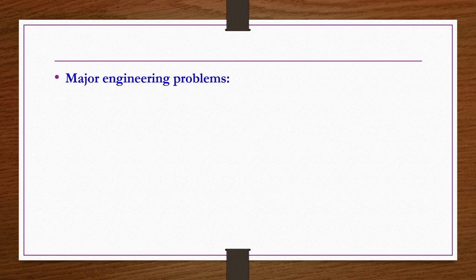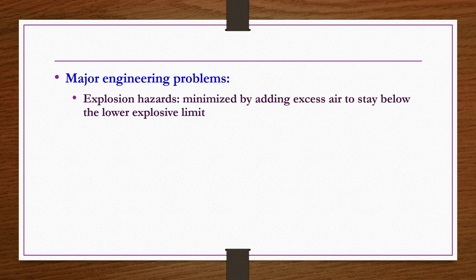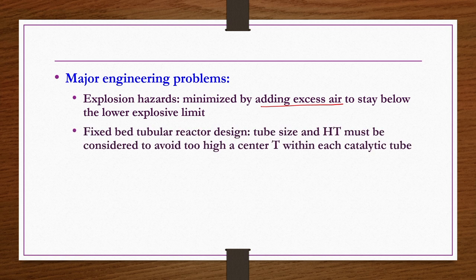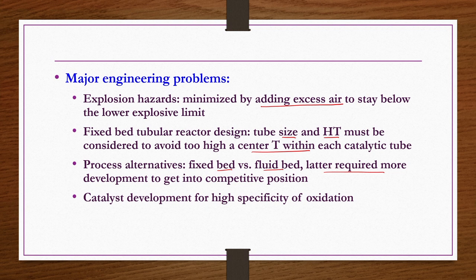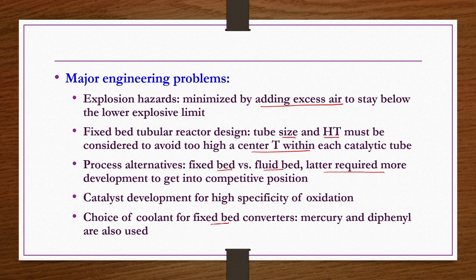Major engineering problems for phthalic anhydride production: explosion hazards can be minimized by adding excess air to stay below the lower explosive limit. For fixed bed tubular reactor design, tube design and heat transfer must be considered to avoid too high a center temperature within each catalytic tube. Process alternatives of fixed bed versus fluid bed are available options, though fluid bed requires some more development to reach a fully competitive position. Catalyst development for high specificity of oxidation is required. Choice of coolant for fixed bed converters is also important; mercury and diphenyls are used as coolants.